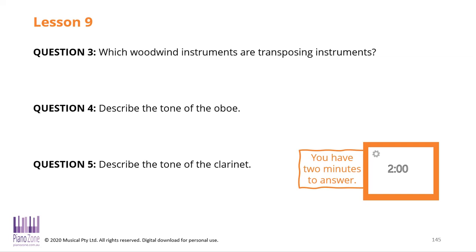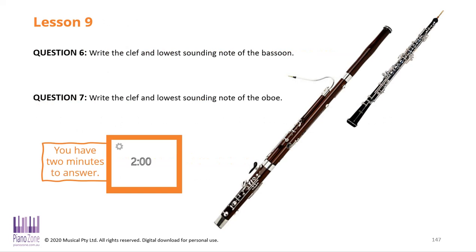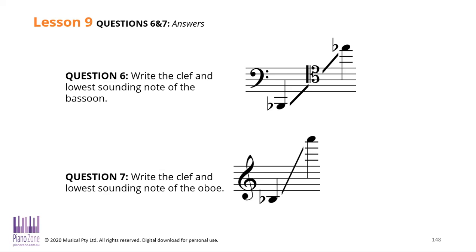The sorts of questions you'll be asked are: which woodwind instruments are transposing, and describe the tone of each instrument. For example, an oboe is very nasal and a clarinet sounds very hollow — those are the kinds of words they're looking for. All of those answers are in your cheat sheets, and they're pretty straightforward once you've watched all those videos.